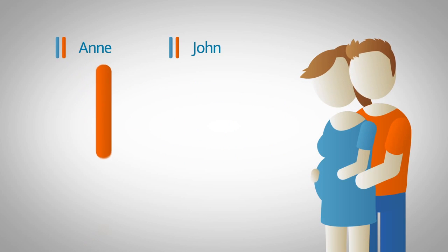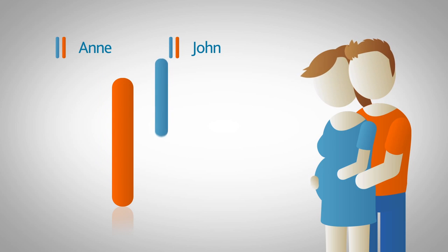If Anne passed on the non-working gene and John the normal working gene copy, then the child will be a healthy carrier, just like its parents.